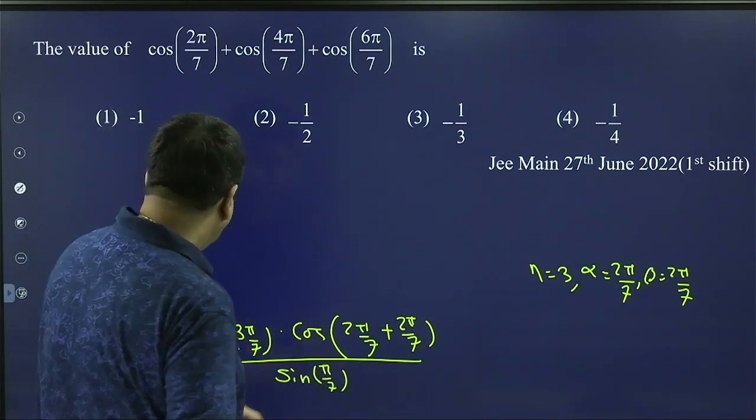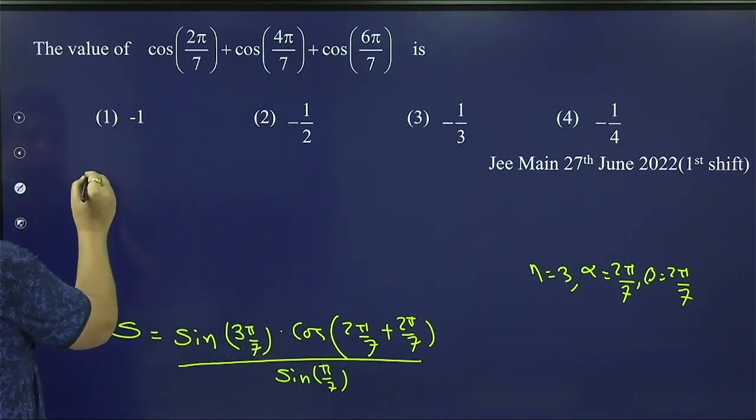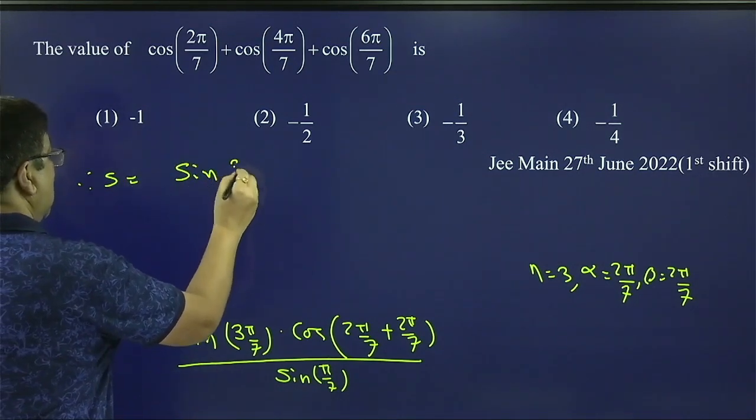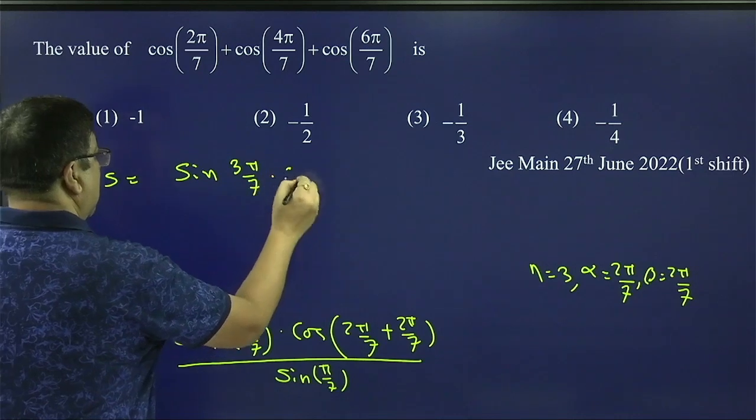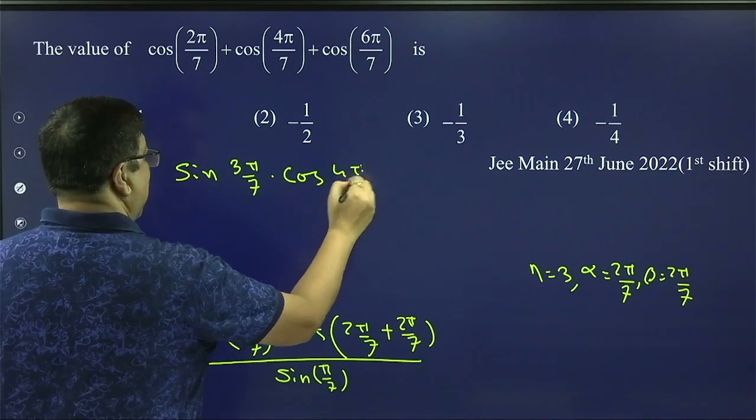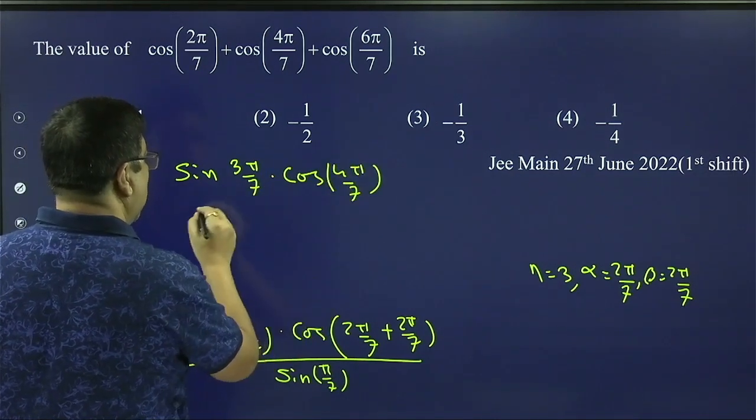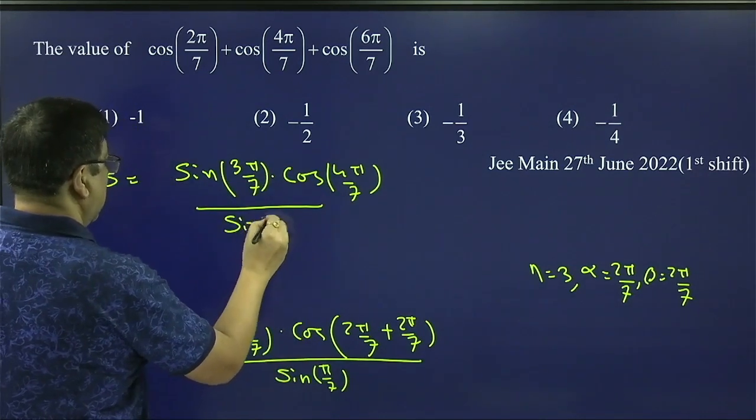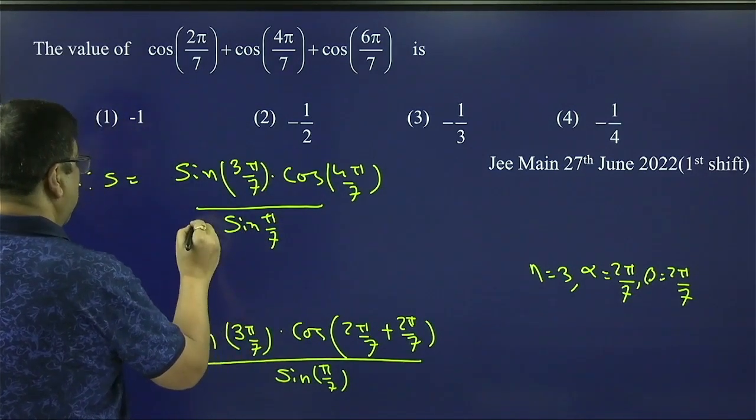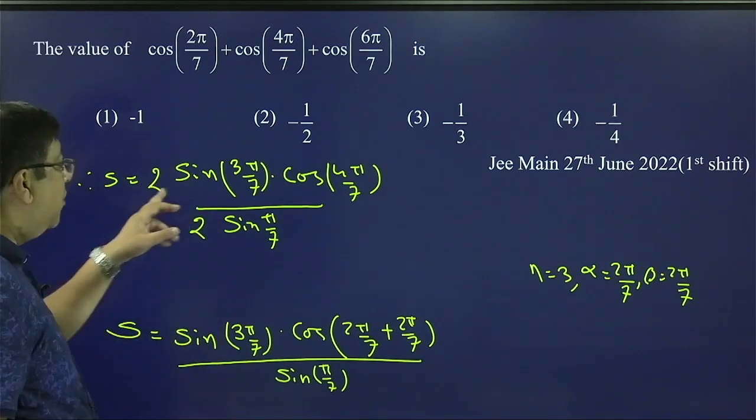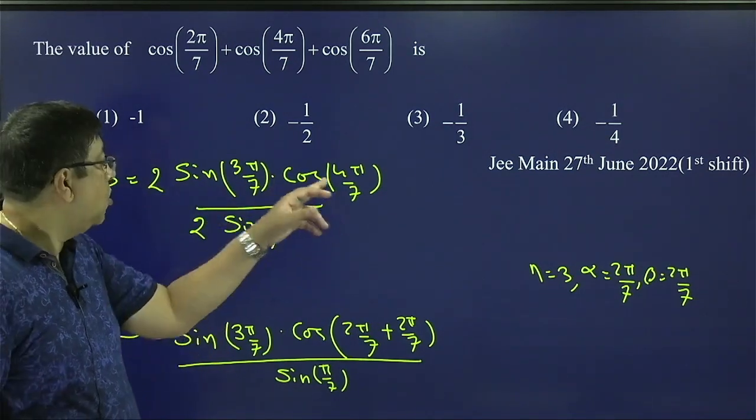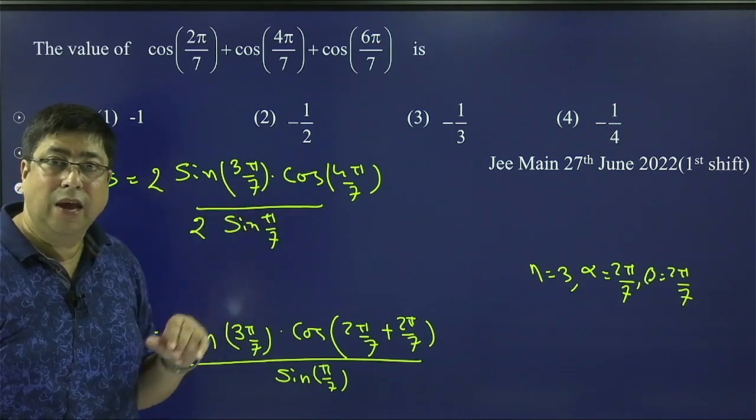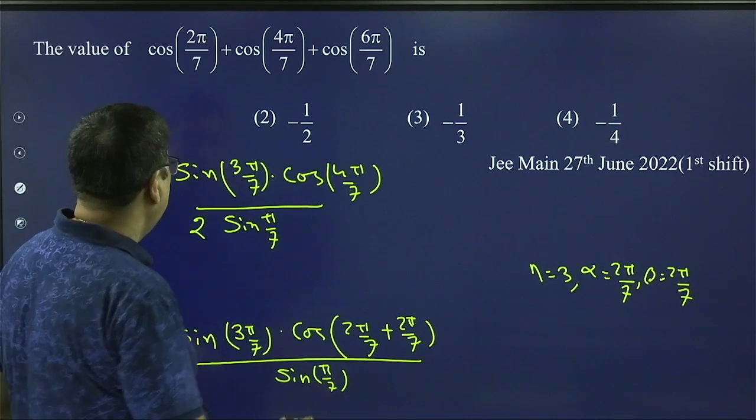So in this case, if I simplify, therefore S = [sin(3π/7) × cos(4π/7)] / sin(π/7). I am multiplying by 2. It is in the form of 2cos((c+d)/2) × sin((c-d)/2) formula of the transformation. That is sin c - sin d. So let us apply sin c minus sin d formula. So we are applying here.